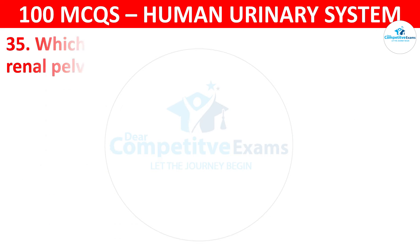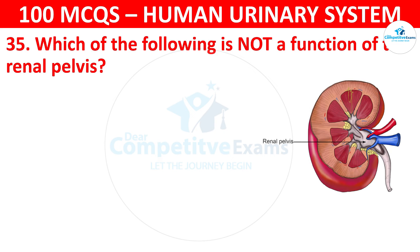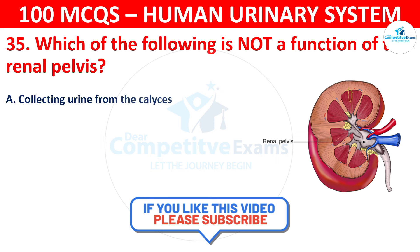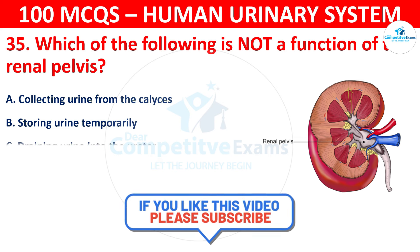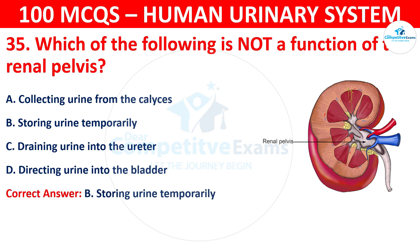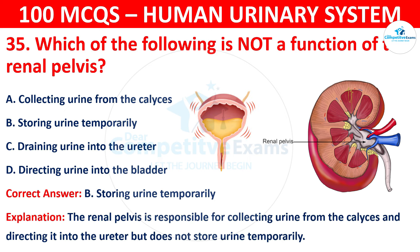Question 35: Which of the following is not a function of the renal pelvis? The options are: collecting urine from the calyces, storing urine temporarily, draining urine into the ureter, or directing urine into the bladder. The correct answer is B, that is storing urine temporarily. The renal pelvis is responsible for collecting urine from the calyces and directing it into the ureter, but does not store urine temporarily.